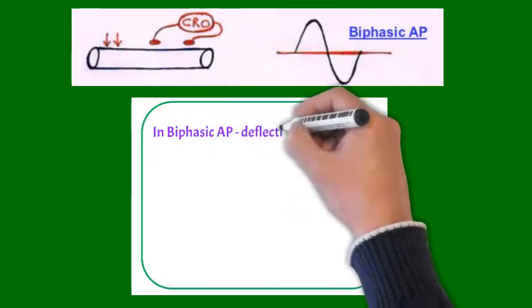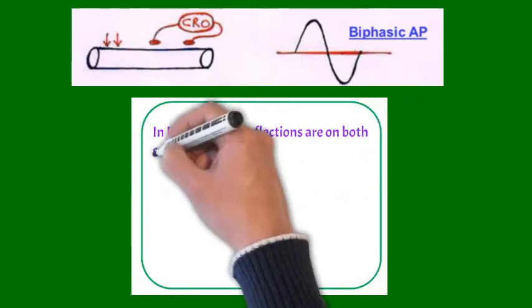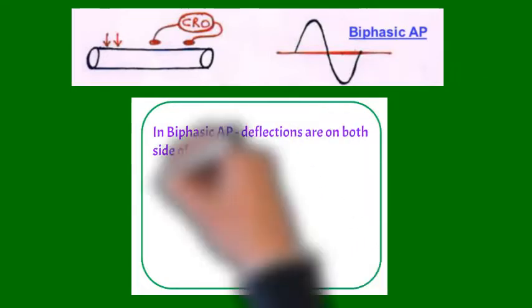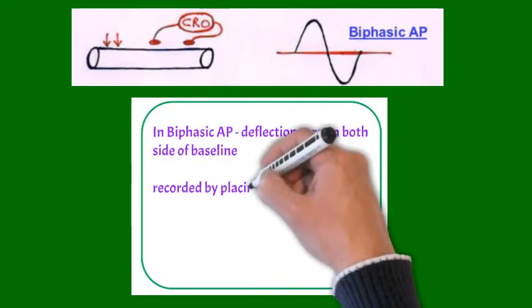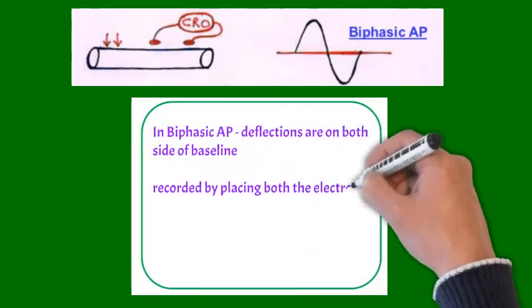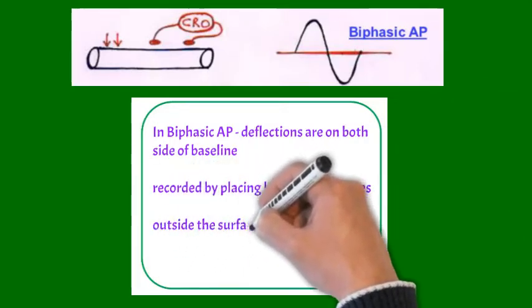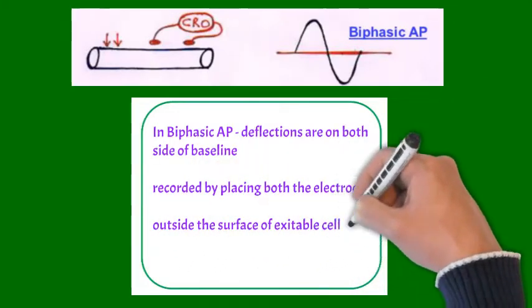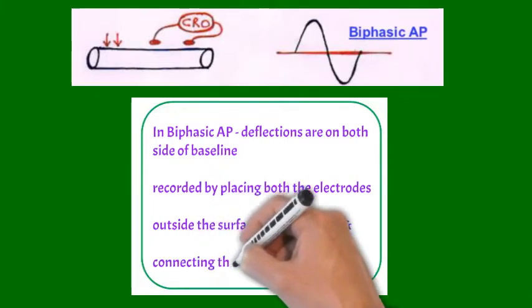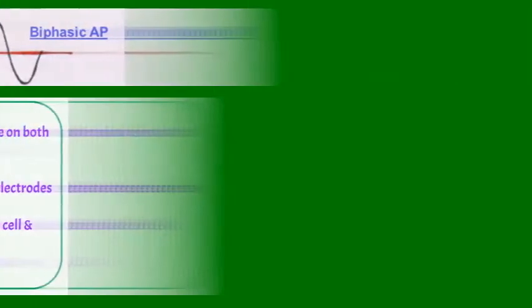In biphasic, as the name suggests, deflections are present on both sides of baseline and it is recorded, as we can see in the figure, by placing both electrodes on outer side of cell membrane and connecting it with CRO, like we record the ECG.